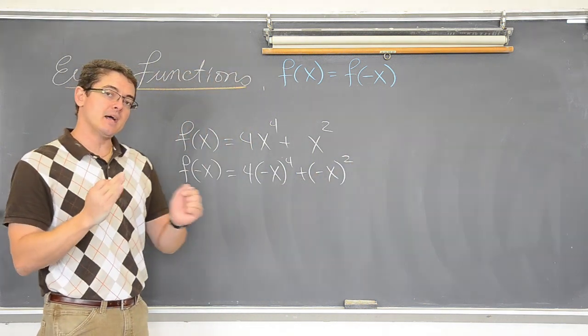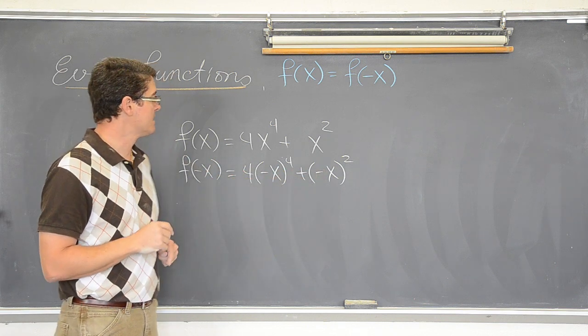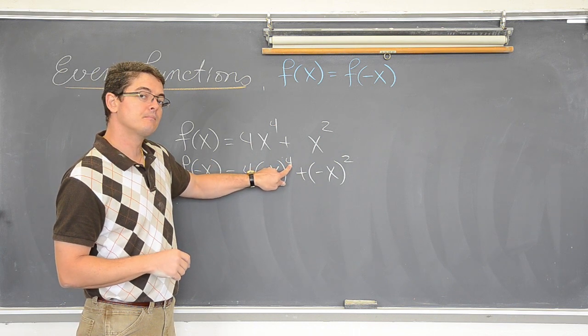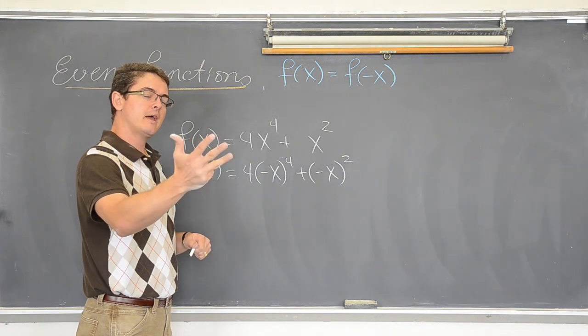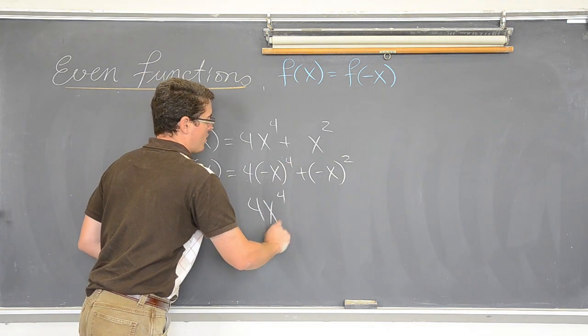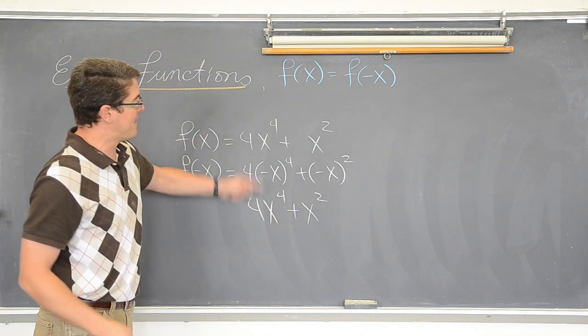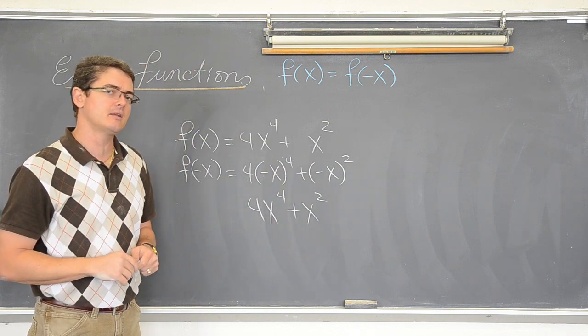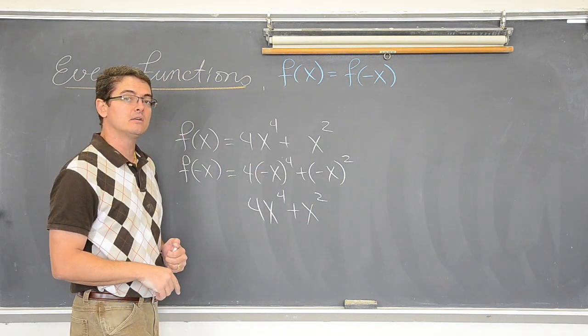Ok, so I have taken my opposite x, my negative x, I have plugged it in where x used to be using parenthesis to make sure you don't make any sign mistakes. What do we have? A negative number raised to an even power. Those negatives are going to cancel out. So 4x to the fourth plus negative squared again. That is going to cancel out. And look, we are right back to where we started again. So, if you have just a basic polynomial, if you plug in the opposite of x and all your signs stay the same, you are looking at an even function.